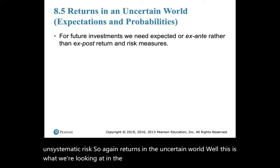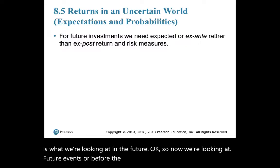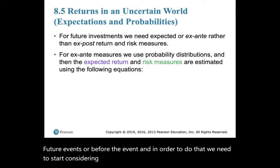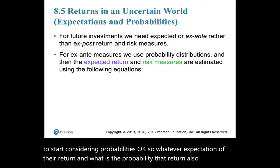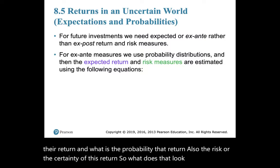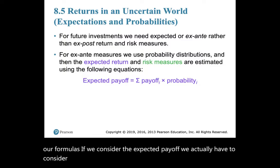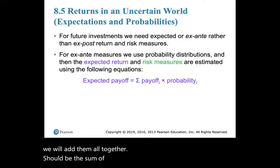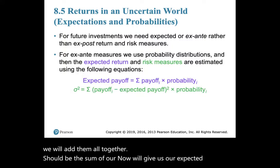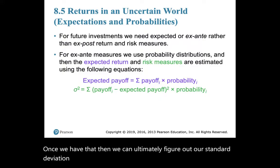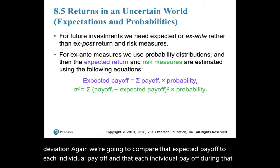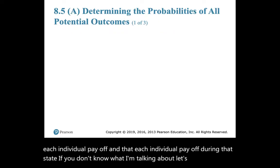We're looking at future events — before the event occurs. In order to do that, we need to start considering probabilities. What is our expectation of the return, and what is the probability of that return, as well as the risk or certainty of that return? If we consider the expected payoff, we have to take each individual payoff times its probability and add them all together to get our expected payoff. Once we have that, we can figure out our standard deviation by comparing the expected payoff to each individual payoff in each state.